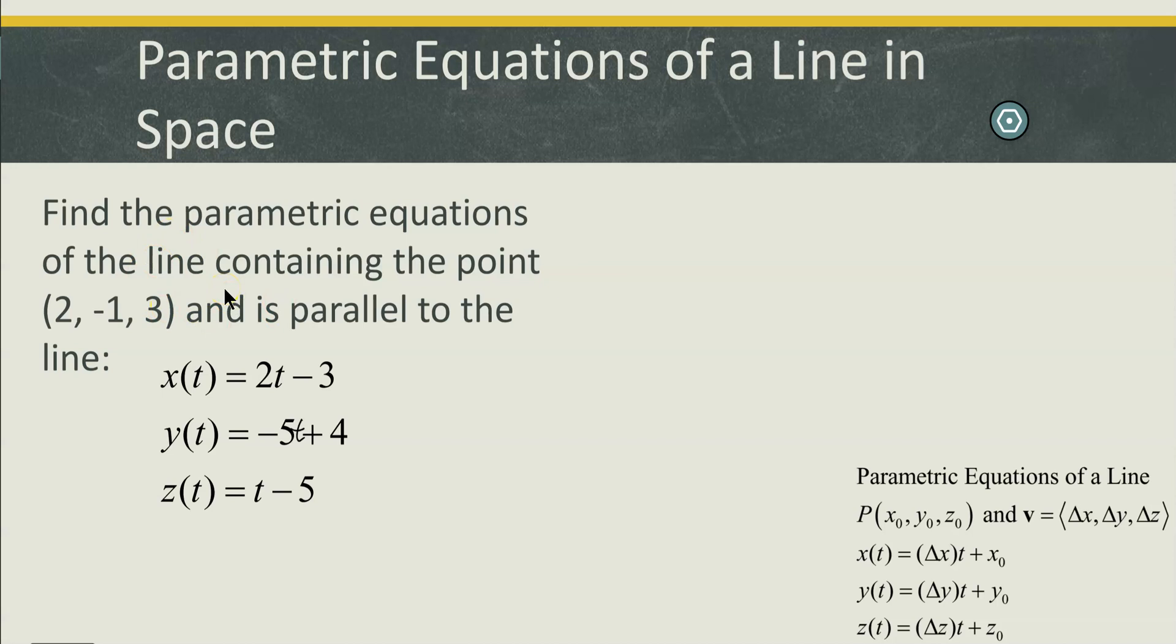Now, we can readily see that we were given the point, so we already know what x naught, y naught, and z naught are. That is 2, negative 1, and 3. So when I go to write the equations for this line, I will be replacing x naught with 2, y naught with negative 1, and z naught with 3.